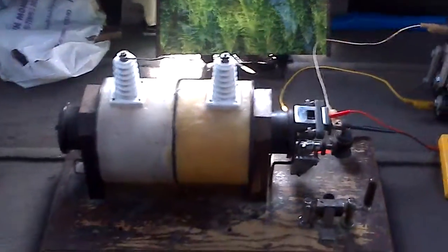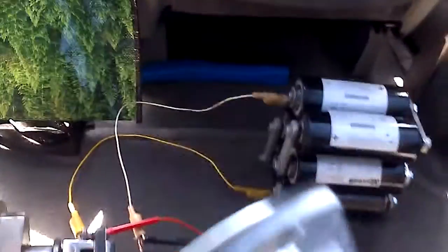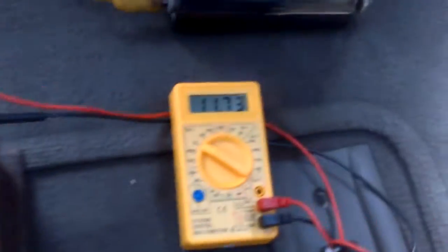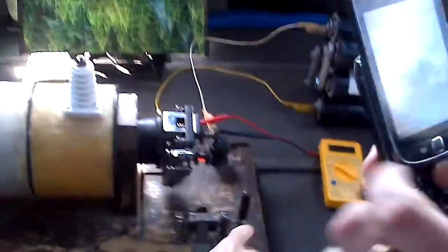We're going to run the spark transmitter again and see how much the voltage drops. The current draw is roughly five amps. We're going to turn it on now. DC arc, it's crazy.